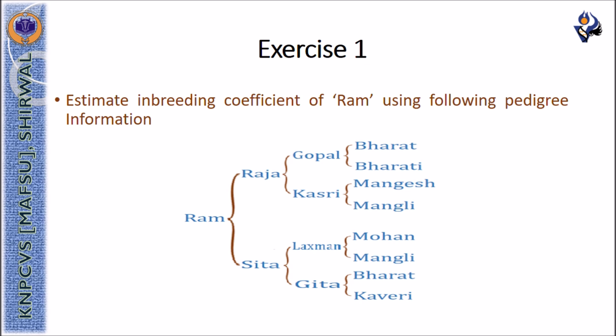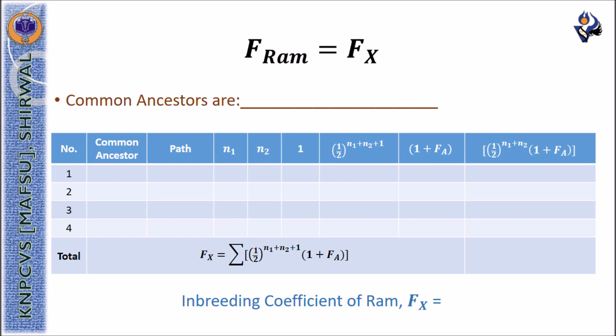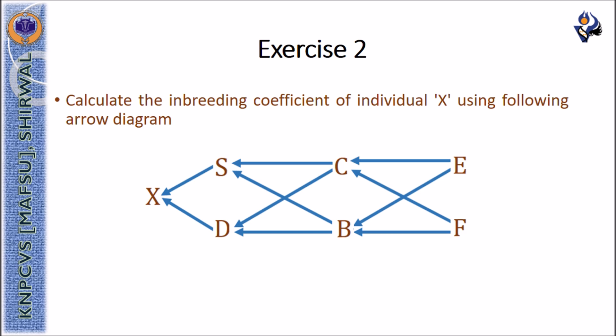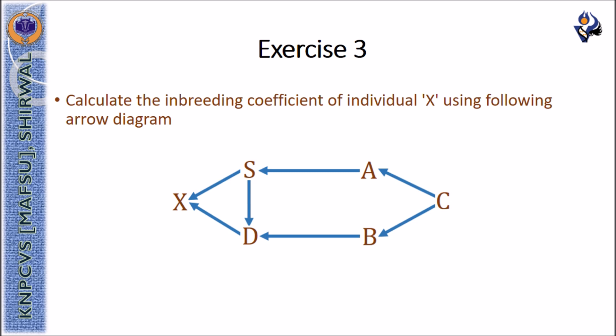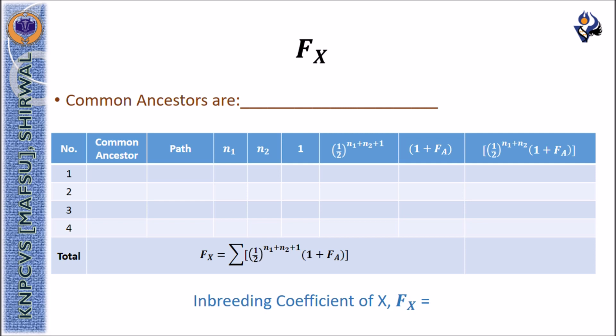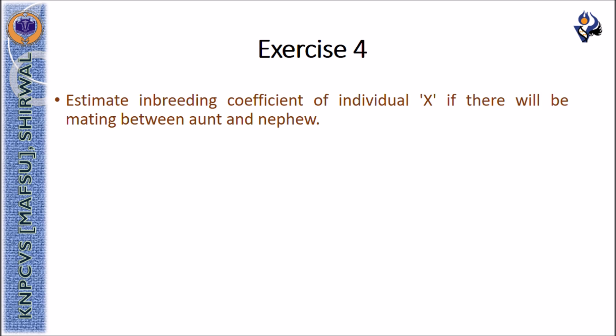Based on that, we have a few more exercises. You will need to estimate the inbreeding coefficient of given individuals. In one exercise, calculate the inbreeding coefficient of individual Ram using the provided table. Another exercise provides an arrow-style pedigree diagram of individual X whose inbreeding coefficient needs to be calculated using the table. A further arrow-style pedigree is given for another calculation of X. The final exercise asks you to estimate the inbreeding coefficient of individual X for mating between aunt and nephew, between full sibs, or between half sibs.